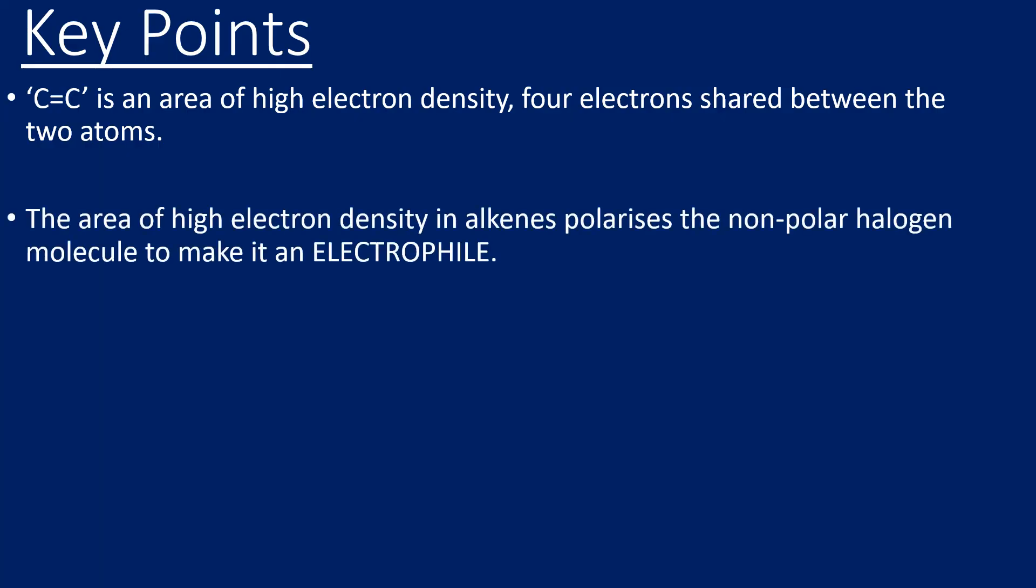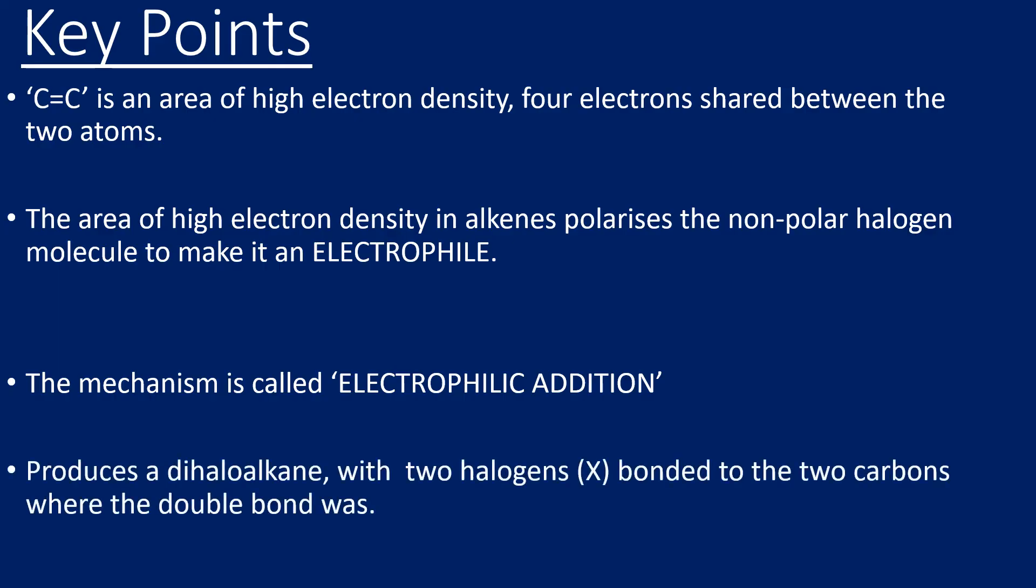So key points for this reaction then. That is key here, that that carbon-carbon double bond is an area of high electron density because that polarizes the non-polar halogen to make it an electrophile. And the reaction is known as electrophilic addition, and we always end up with a dihaloalkane.